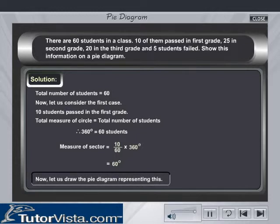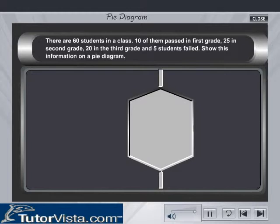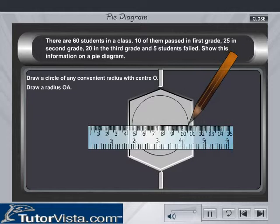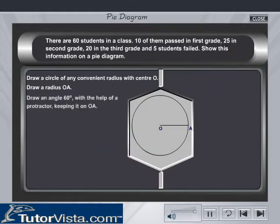Now, let us draw the pie diagram representing this. Draw a circle of any convenient radius with center O. Draw a radius OA. Draw an angle 60 degrees with the help of a protractor keeping it on OA.